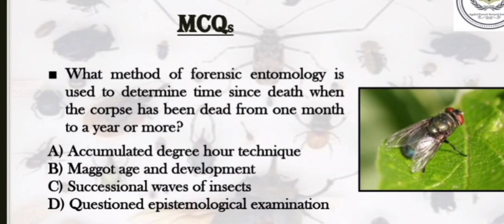In our previous uploaded video, the topic was forensic entomology. The question was: what method of forensic entomology is used to determine time since death when the corpse has been dead from one month to a year or more? The correct answer is B — maggot age and development. The correct answer of this question is given in the description below.